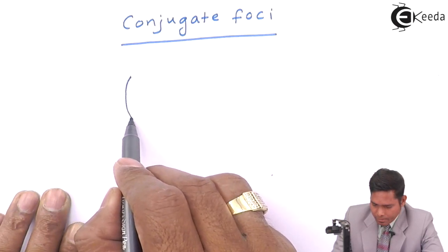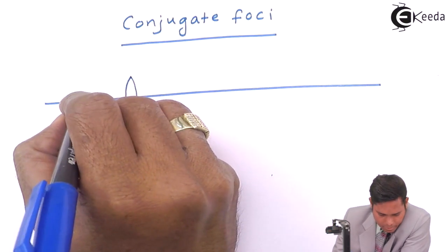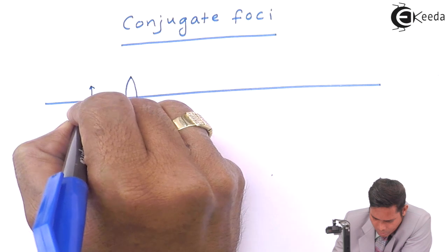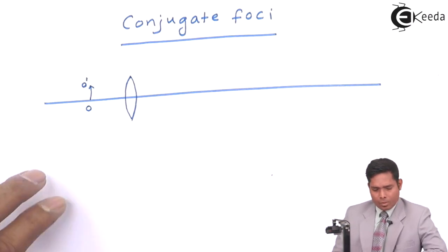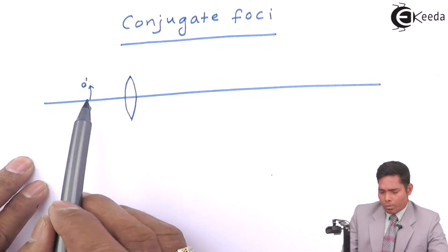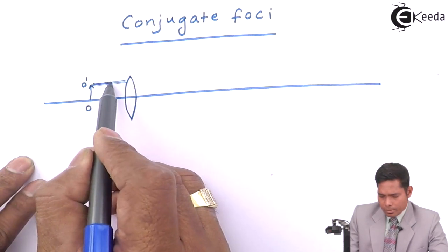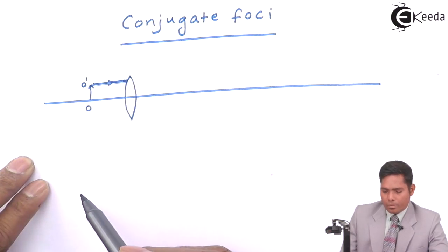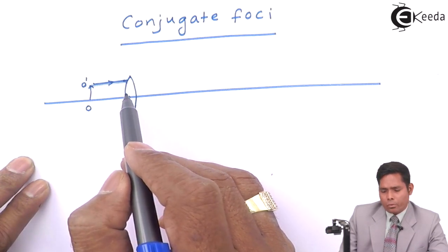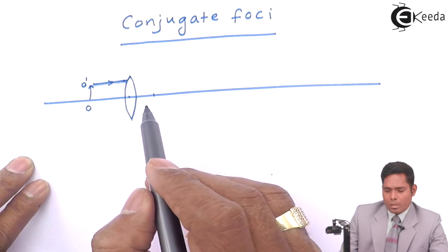I consider a lens here on the principal axis. I place an object — let's call it O — in front of the lens. To find the image, I consider two rays: one ray coming parallel to the principal axis, which will pass through the focus after refraction.